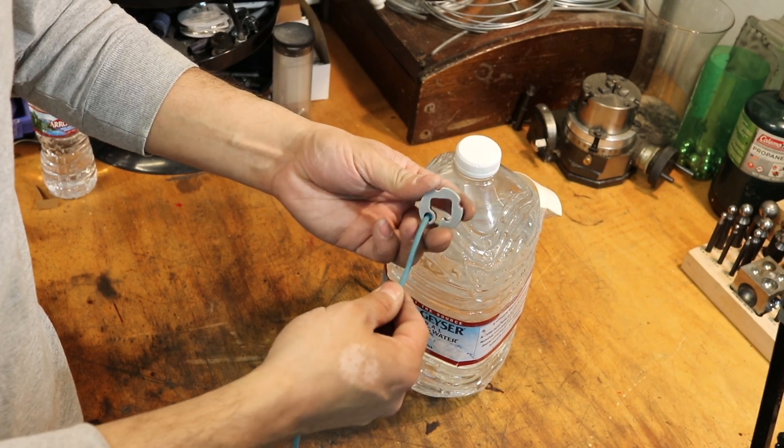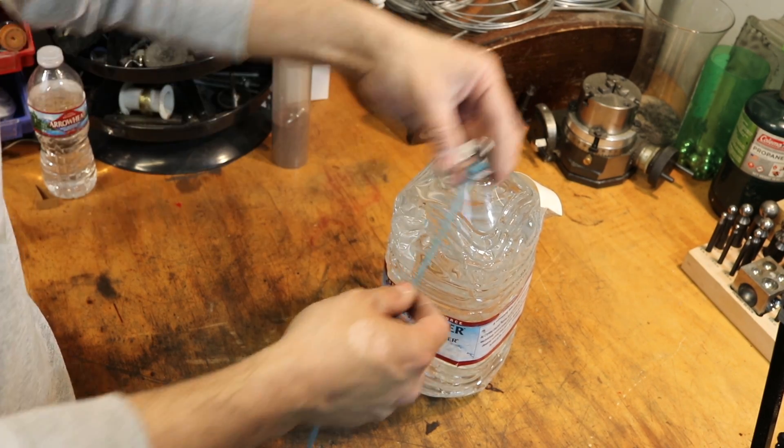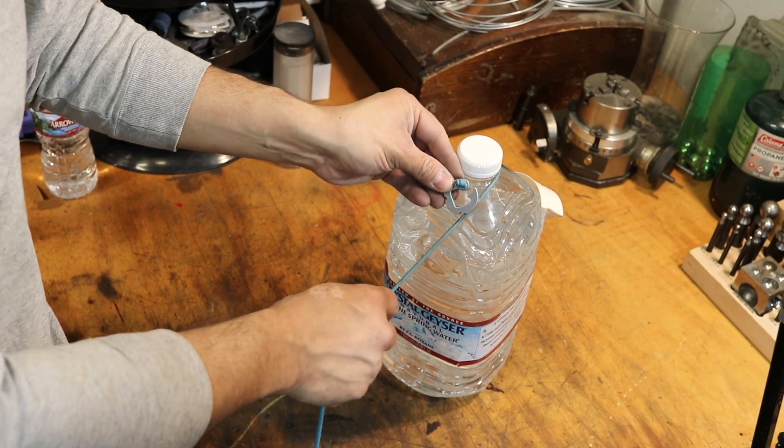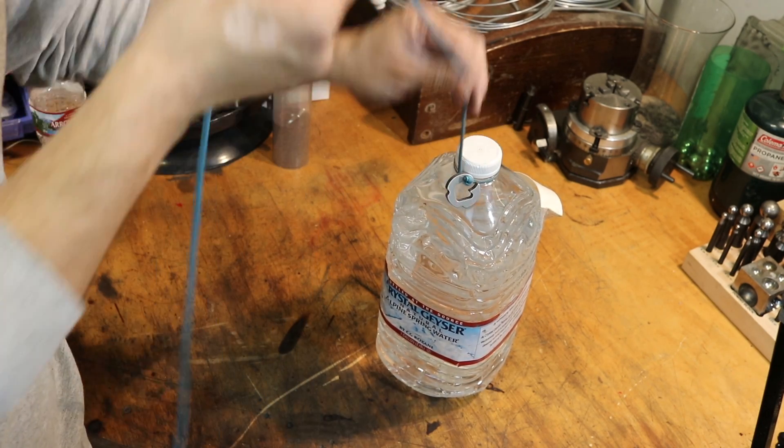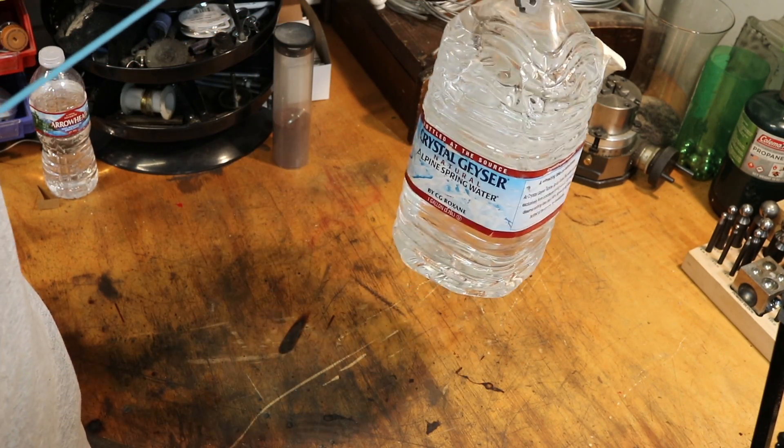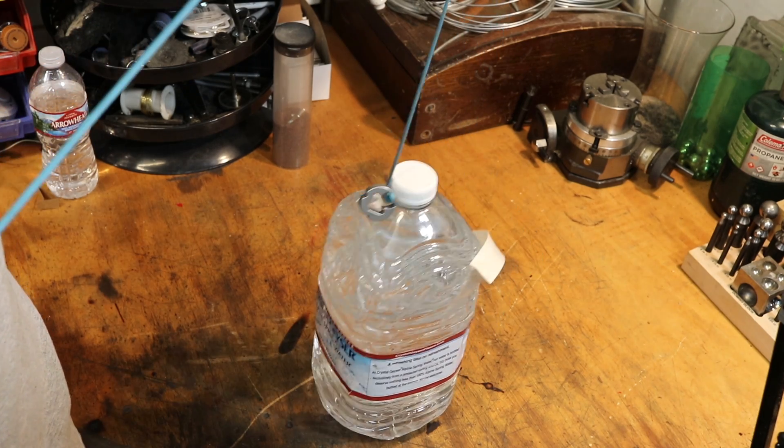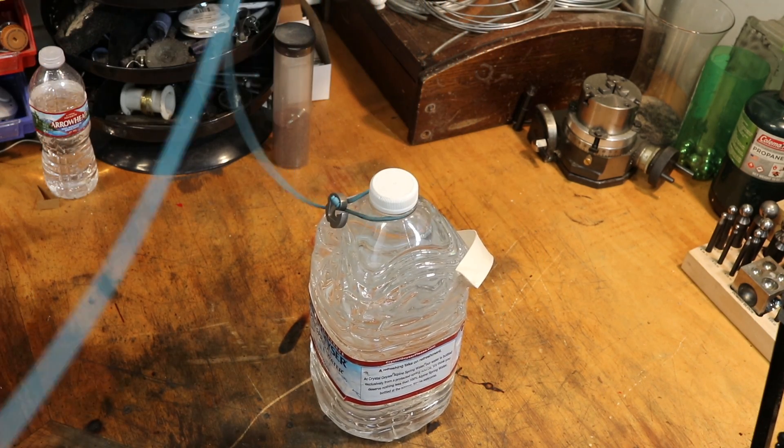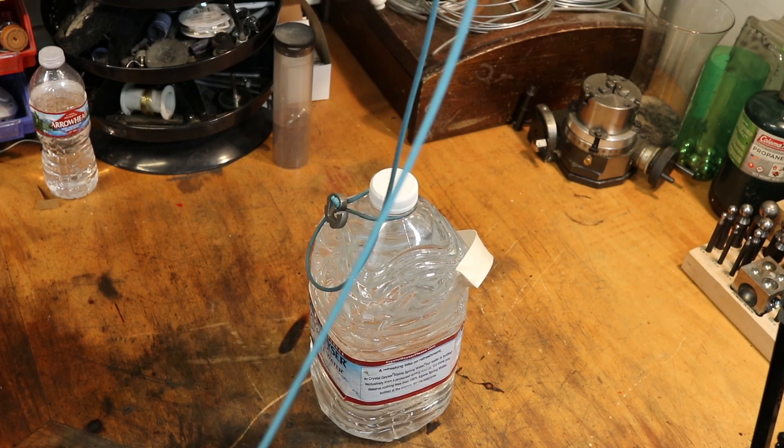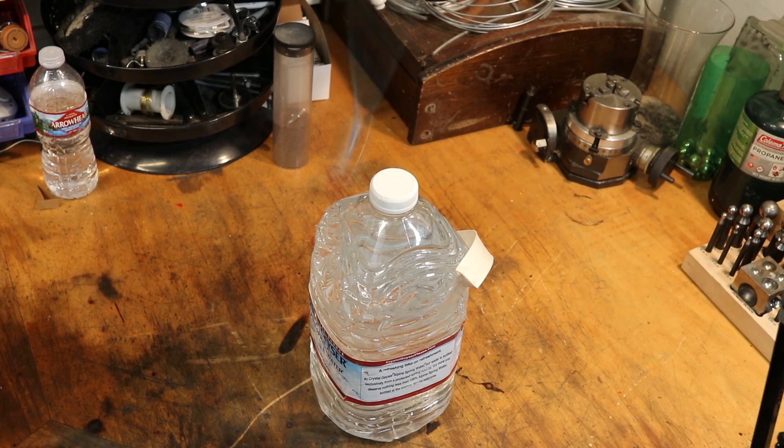You can take your Blackwall paracord hook here. Wrap it around and just bring it underneath. And this allows you to lift it up, lower it down, and then release enough cord so that it comes underneath the hook and you can just bring it free.